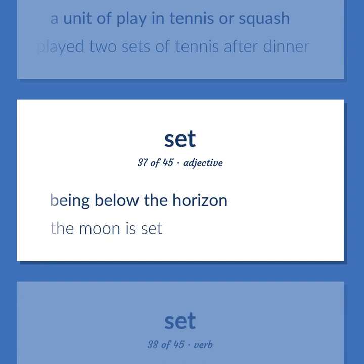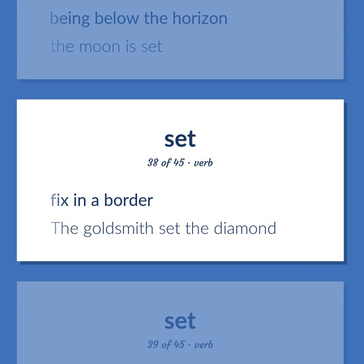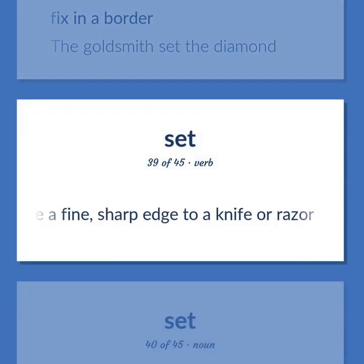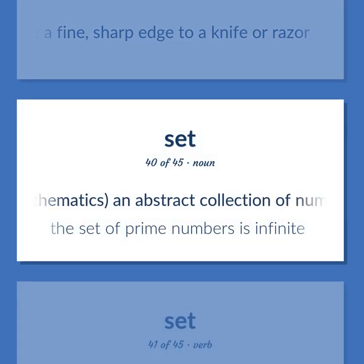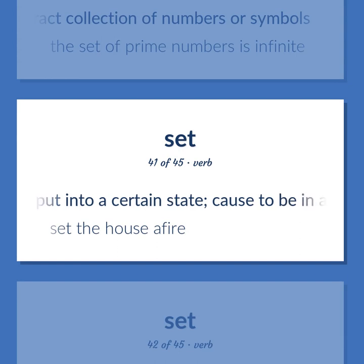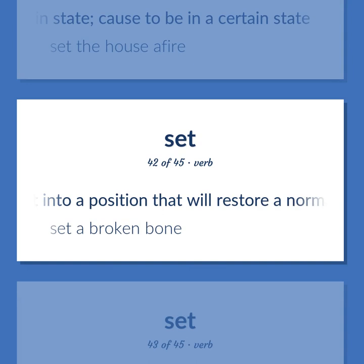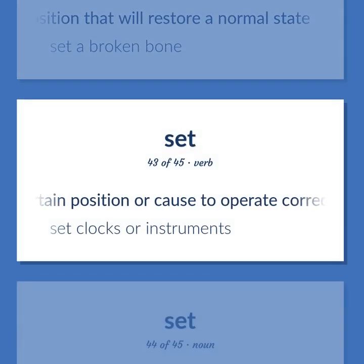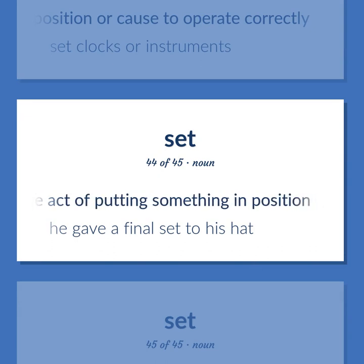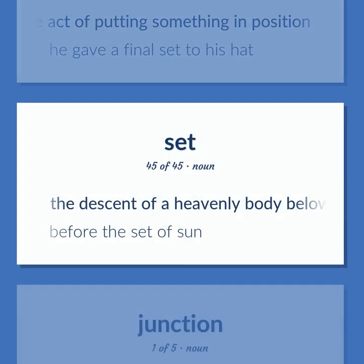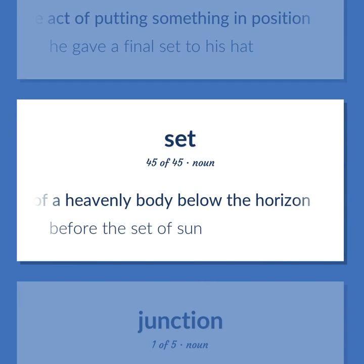Being below the horizon. The moon is set. Fix in a border. The goldsmith set the diamond. Give a fine, sharp edge to a knife or razor. Mathematics: an abstract collection of numbers or symbols. The set of prime numbers is infinite. Put into a certain state; cause to be in a certain state. Set the house afire. Put into a position that will restore a normal state. Set a broken bone. Set to a certain position or cause to operate correctly. Set clocks or instruments. The act of putting something in position. He gave a final set to his hat. The descent of a heavenly body below the horizon. Before the set of sun.